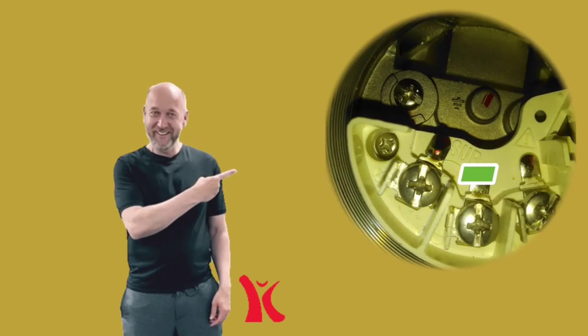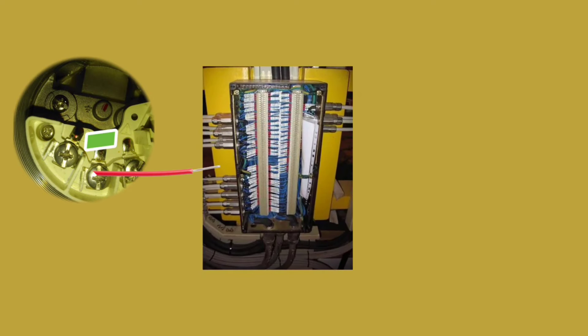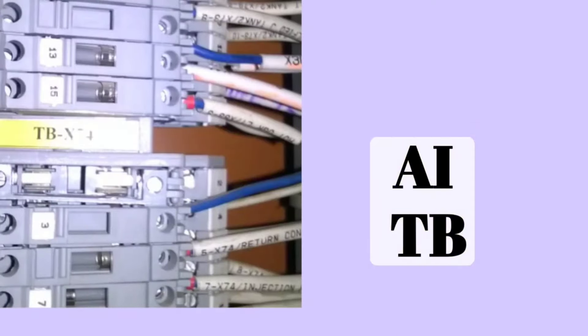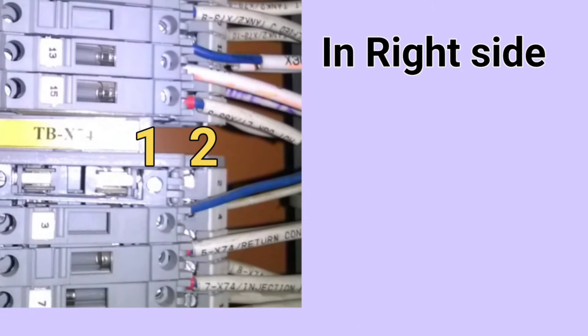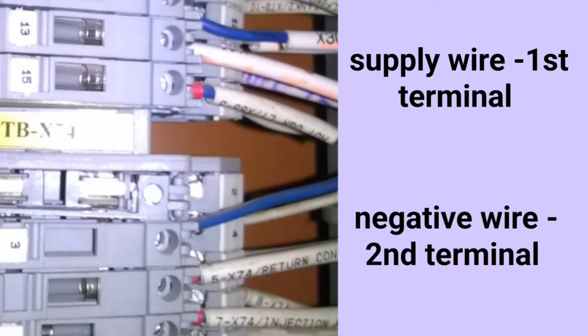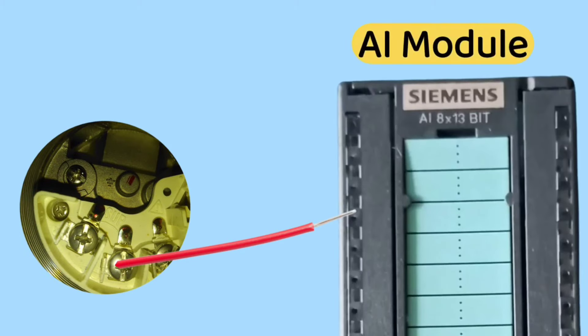Friends, now let us see how the negative terminal of the transmitter is connected to PLC. From the negative terminal of the transmitter, the wire is passed through the same field JB and taken to PLC panel. This wire is also brought to AITB of the PLC. In AITB, for transmitter connections, two terminals are provided. In the first terminal, we connected the supply wire. We will connect this negative wire to the other terminal. After this, we will connect the wire that has come from the negative terminal of the transmitter to the AI card, meaning we will connect it to the AI module.